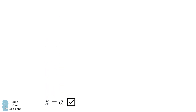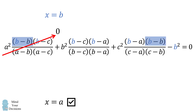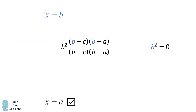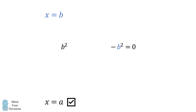Going back to the original equation, we similarly substitute x equals b. b minus b equals zero, so the entire first term vanishes. Then b minus b equals zero, so the entire third term vanishes. The numerator of the remaining term equals the denominator, so they cancel to one. The equation simplifies to b squared minus b squared equals zero — a true statement. So x equals b is a solution of the original equation.